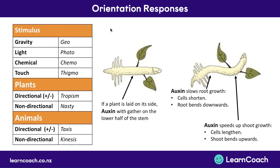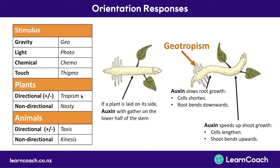This is a response to gravity. Auxin gathers in the lower half of the stem using gravity, causing the roots to grow in the same direction as gravity. When naming it, we use the stimulus — gravity — so we say 'geo', and because it's a directional response of a plant, it's a tropism. So we call that geotropism. The shoots also show geotropism, but they grow away from gravity — so that's also called geotropism, just in the opposite direction.